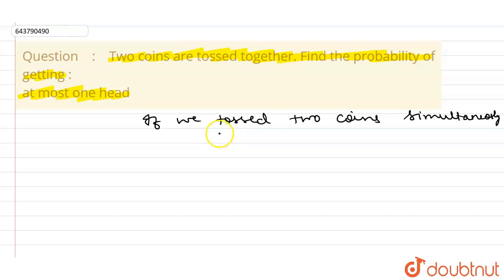The favorable outcome - at most one head means maximum one head. So I can write here favorable outcomes. Here it is two heads, but we have to take maximum one head.